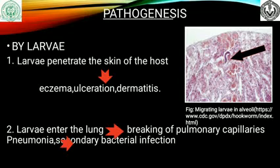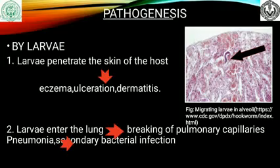The pathogenesis can be caused by the migrating larvae and also by the adult. Larvae can penetrate the skin of the host and cause ulceration and dermatitis. They also enter the lung, causing breaking of the pulmonary capillaries and destruction of the alveoli, resulting in pneumonia and secondary bacterial infection.